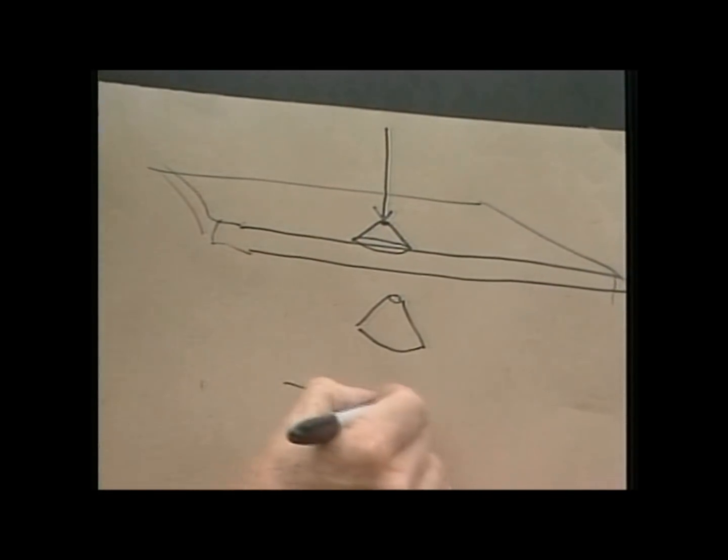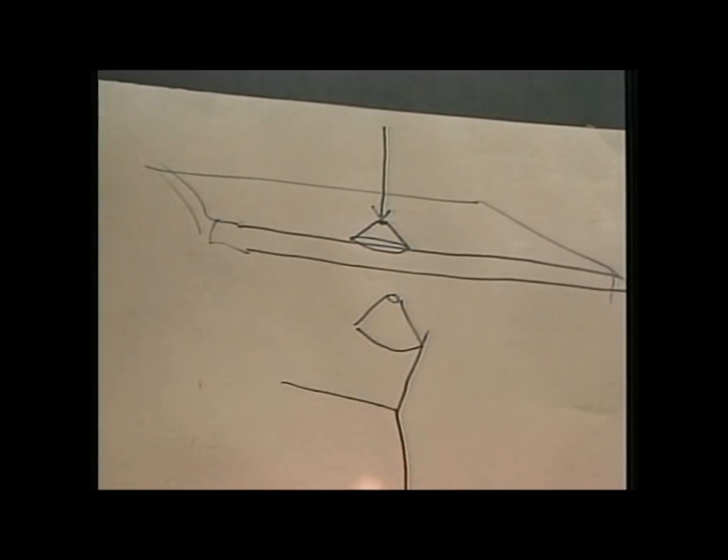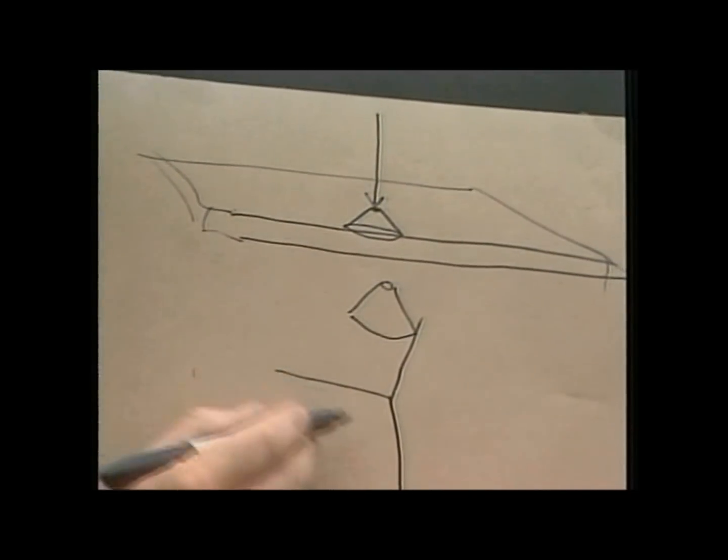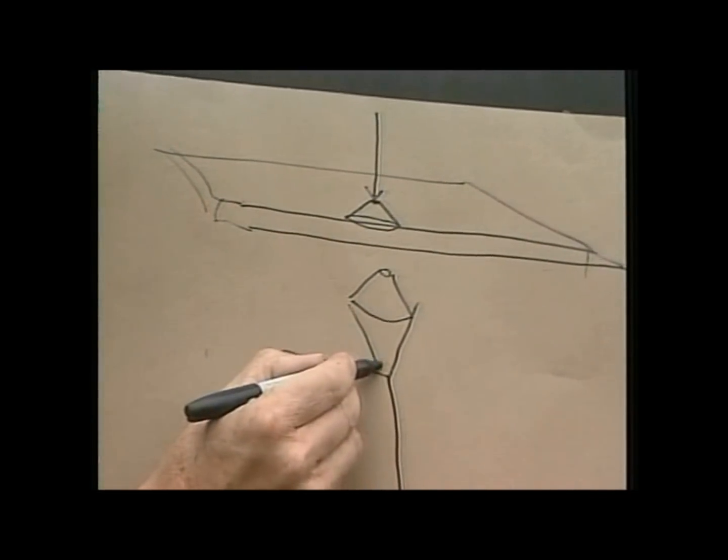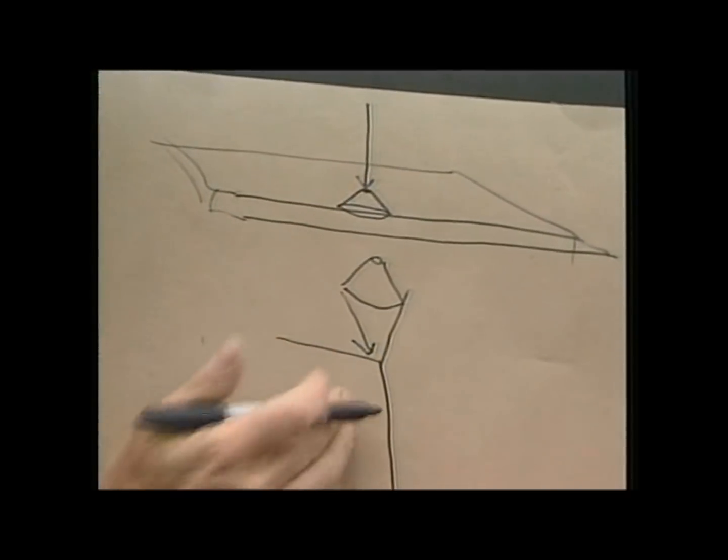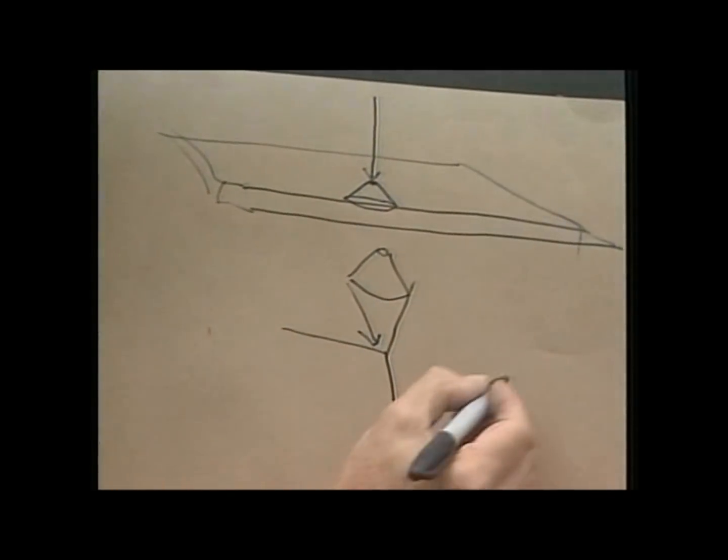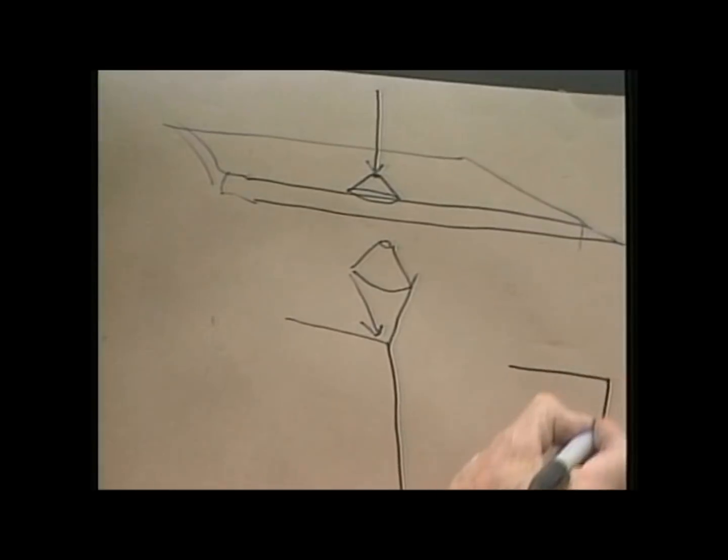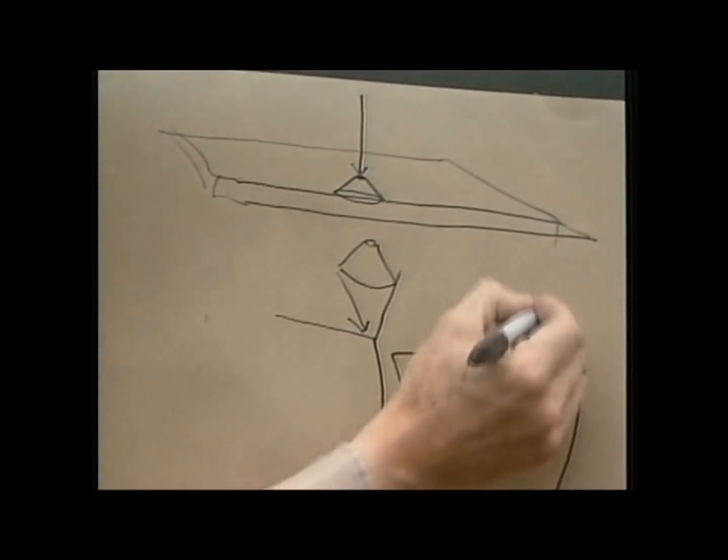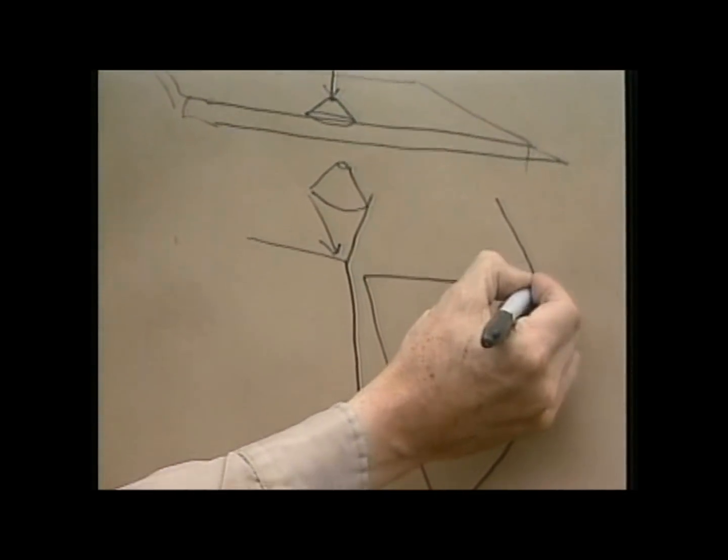So what happens is instead of hitting the middle of a piece of material, one strikes near an edge where two faces of material come together, so that looking at it from the side, this is a chunk of rock, one strikes near the edge like this.